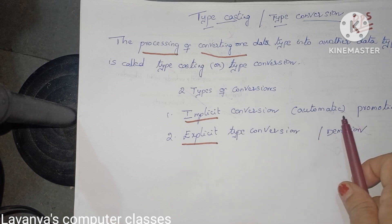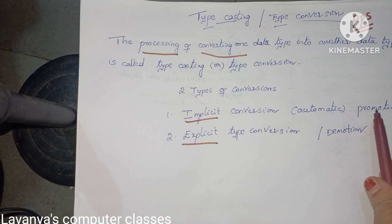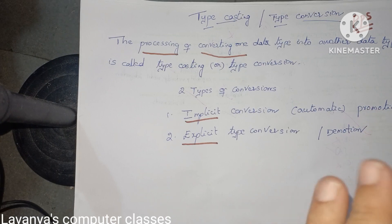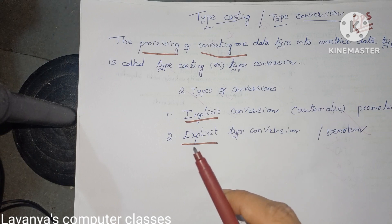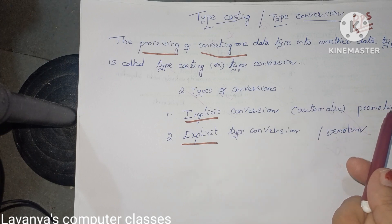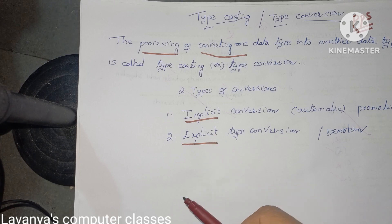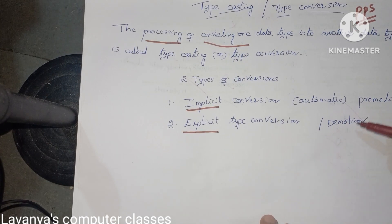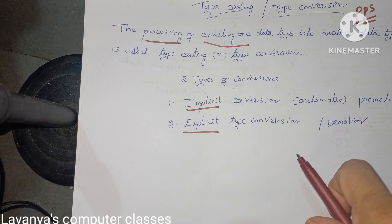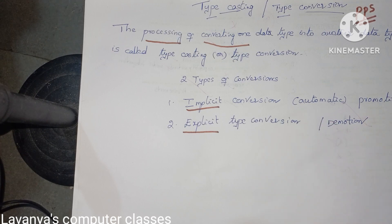Implicit conversion is automatically done and is called as promotion, because a smaller data type is converted into a larger data type — small values are stored into a larger data type. Explicit type conversion means a larger data type is stored into a smaller data type, which is called as demotion. Explicit conversion is done by the user; implicit conversion is done by the compiler automatically.